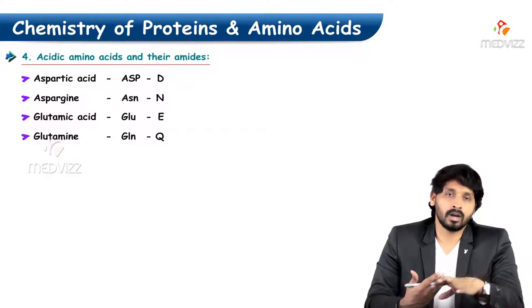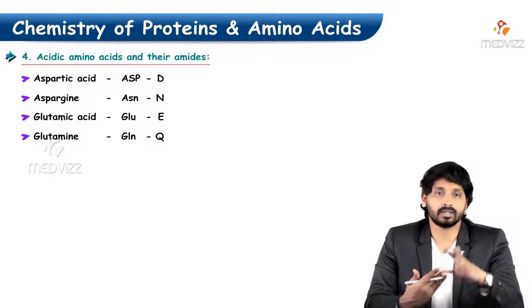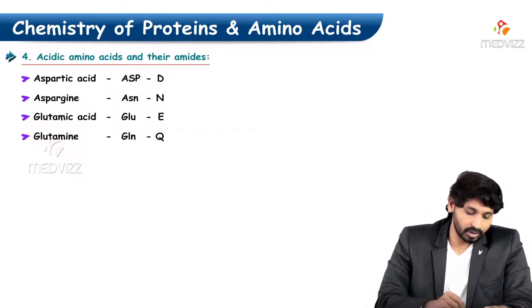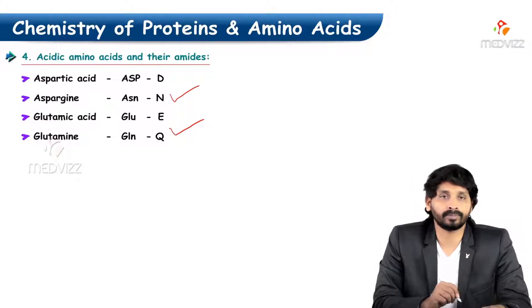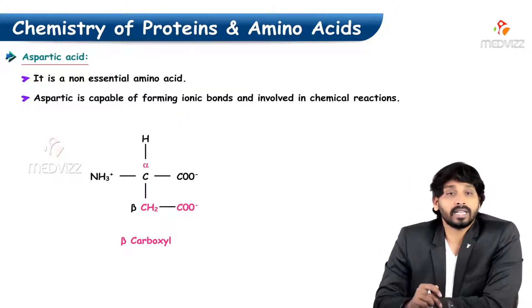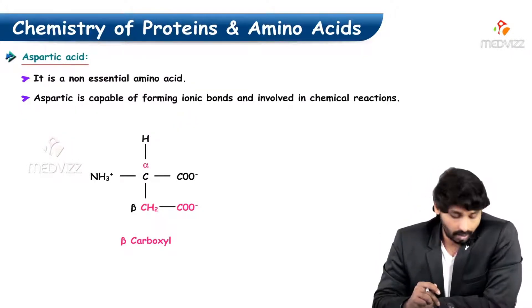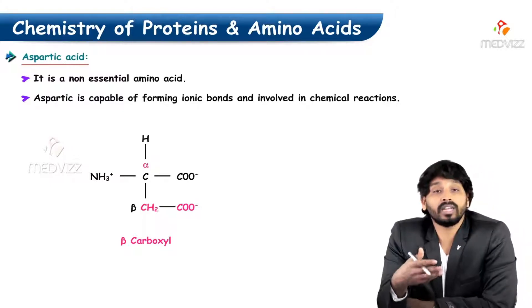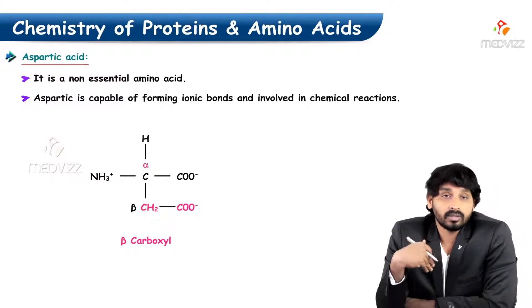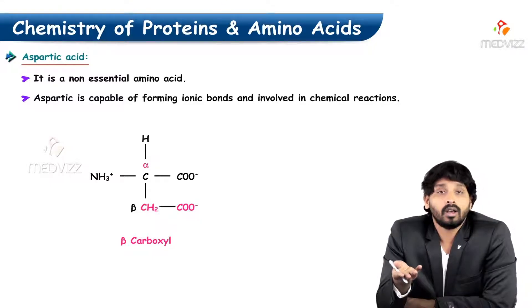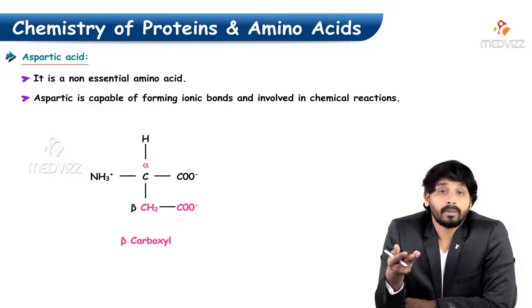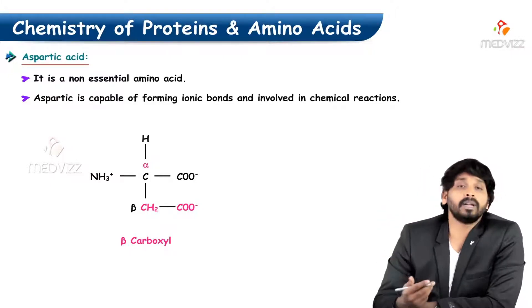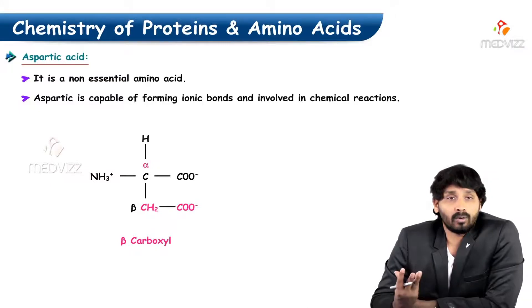The acidic amino acids are aspartic acid, asparagine (which is the amide form), glutamic acid, and glutamine (also the amide form). Aspartic acid is a non-essential amino acid which is capable of forming ionic bonds and is involved in chemical reactions because of the presence of this extra carboxylic group.